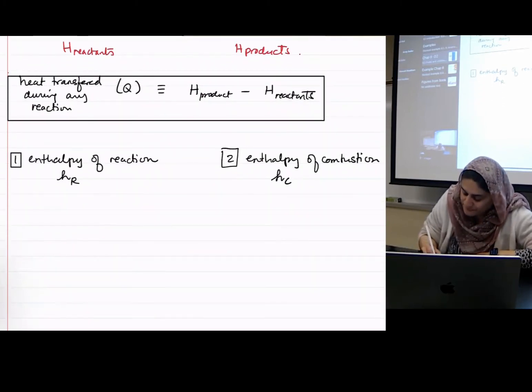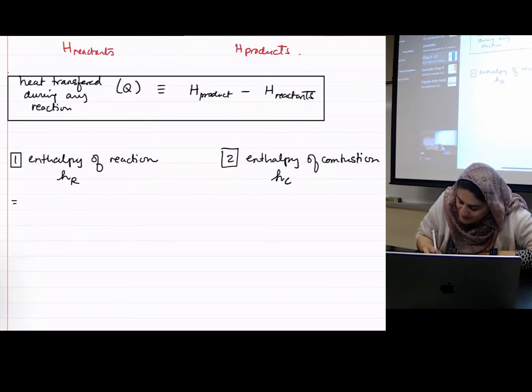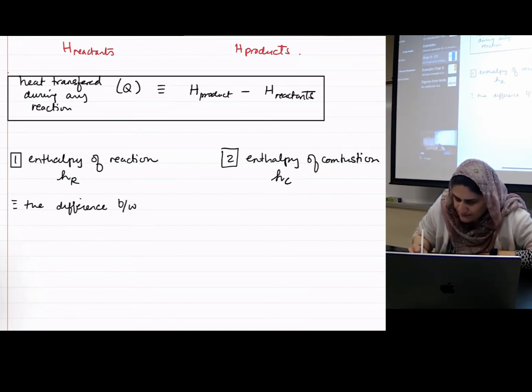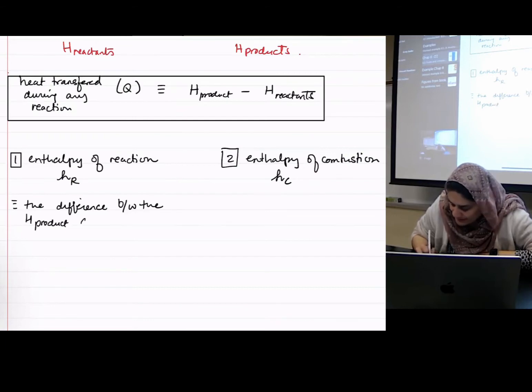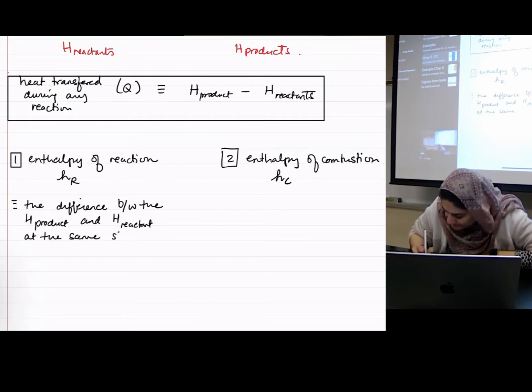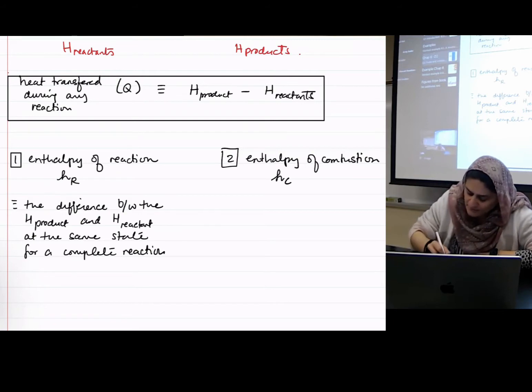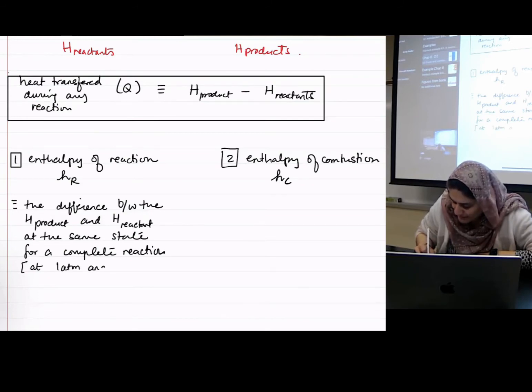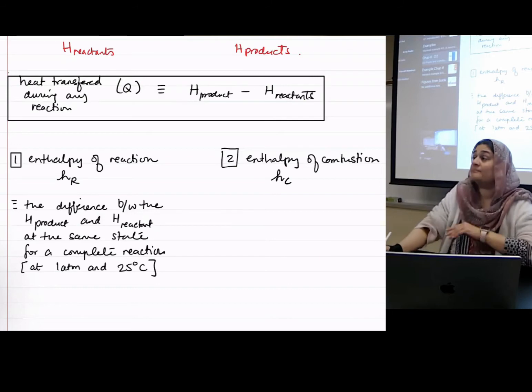Okay, let me define this. This is defined as the difference between the H product and H reactant at the same state for a complete reaction, for the same state, usually considered at one ATM and 25 degrees Celsius, room temperature.